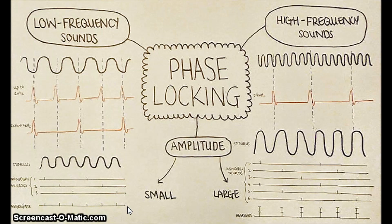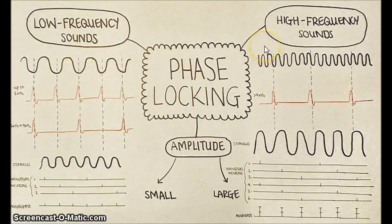Phase locking occurs with sound waves up to about 4 kHz. Above this point, sound waves travel too fast for the action potentials of individual neurons to accurately represent their timing.